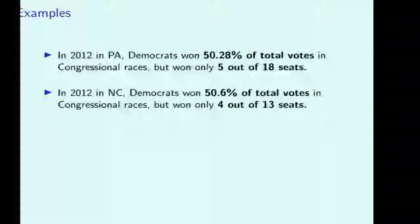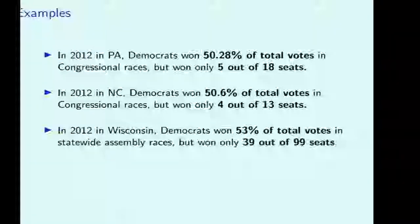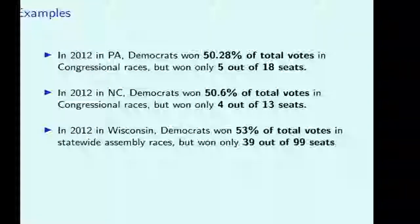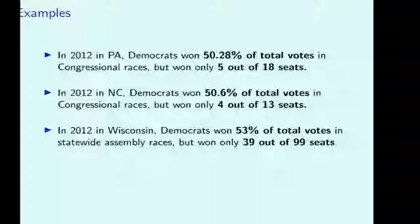In 2012 in North Carolina, the same thing happened — the Democrats won a strict majority of the votes but won only four out of 13 seats, with the rest going to Republicans. In Wisconsin in 2012, looking at the state legislative equivalent of the House of Representatives — 99 seats in 99 districts — Democrats won 53% of the vote overall but got only 39 out of 99 seats. That's a really big difference between the vote count and the seat outcome.